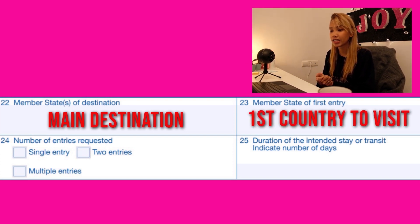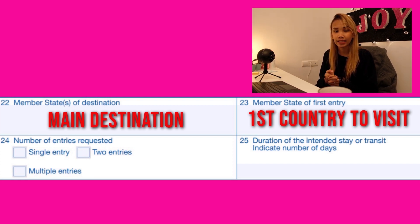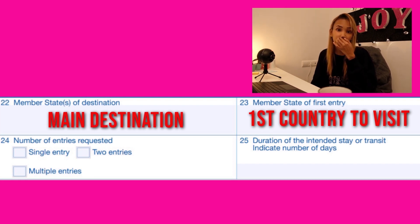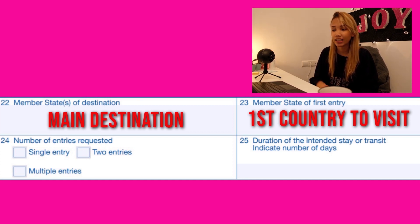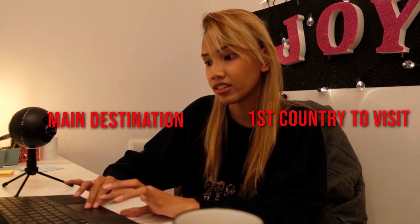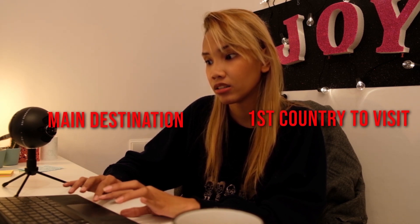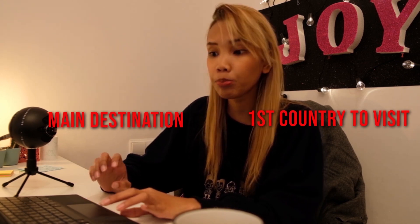For number twenty-three, it's the first entry member state. This is whichever Schengen country your flight ticket goes to first. For example, if your ticket is to Berlin, Germany, then your first entry will be Berlin. Make sure this matches the plane ticket that you have.